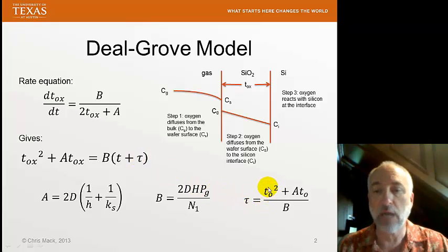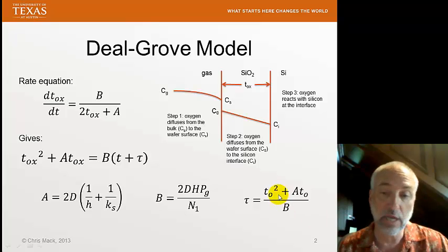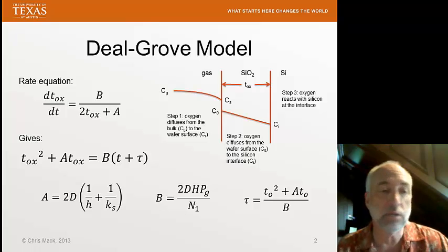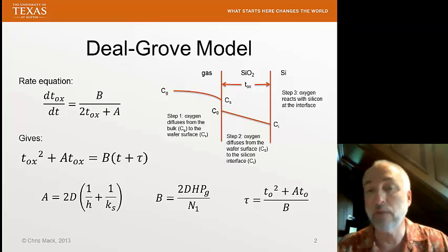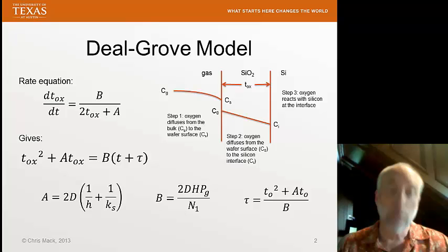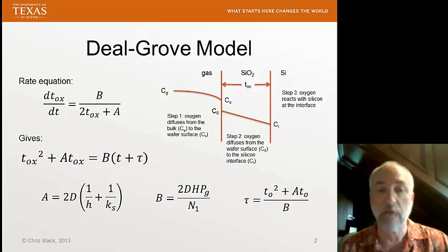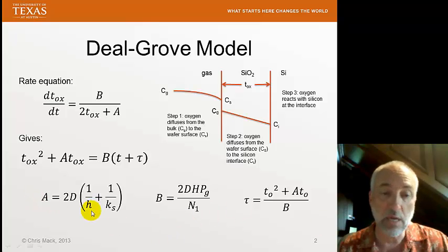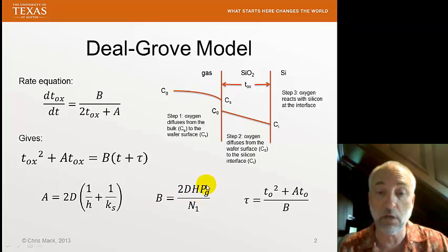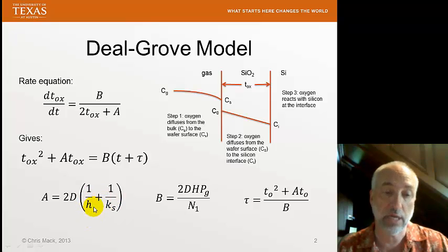Tau takes into account the possibility that there's an initial oxide film on the wafer. We might start with bare silicon, in which case T0 is zero and tau will be zero, but we might start with 100 or 1,000 nanometers of oxide on the wafer. The oxidation then begins more slowly because it already has to diffuse through that initial oxide film. The constants A and B are lumped parameters related to more fundamental terms like diffusivities, Henry's Law constant, partial pressures, surface rate constant, and mass transfer coefficient.